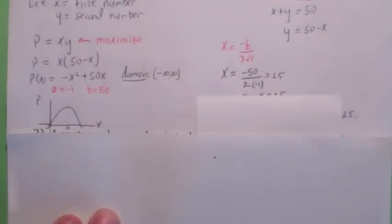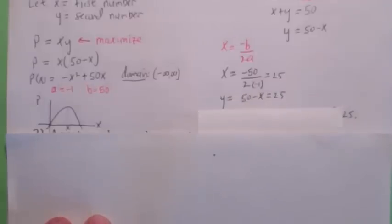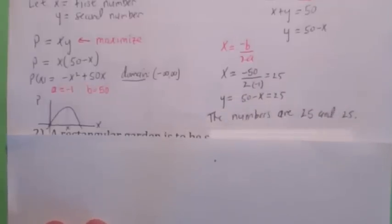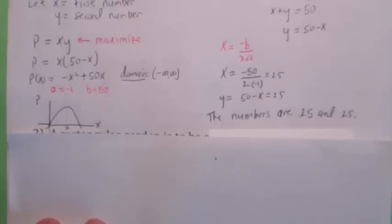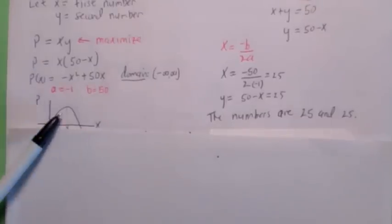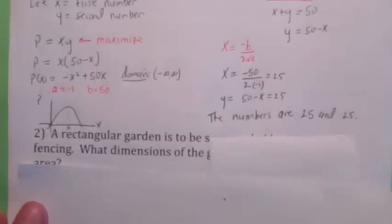x equals negative b over 2a, which turns out to be 25. y becomes 50 minus x, which is also 25, so the numbers are 25 and 25. The question did not ask for the maximum product. If it did, you could plug in 25 into p of x and find p of 25. The y coordinate of the vertex would be the maximum product.